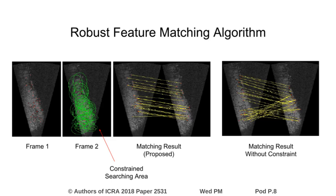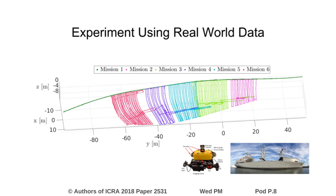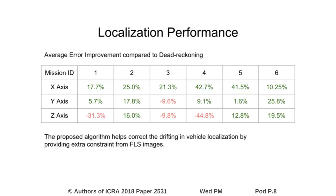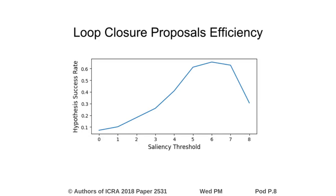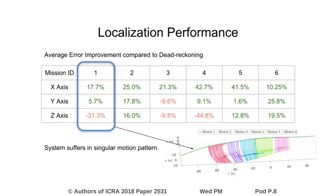We evaluate our method using real-world data collected in a ship hull inspection mission using a hovering autonomous underwater vehicle. A set of trajectories around different portions of the ship hull is included in the experiment. Localization accuracy compared to dead reckoning indicates the proposed algorithm helps correct the drifting in vehicle pose estimation by providing loop closure constraints from forward-looking sonar images. Our system analysis indicates that the saliency detection dramatically increased the system efficiency by boosting the success rate of loop closure proposals.